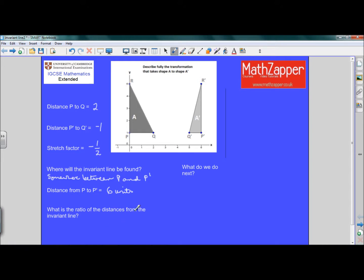What's the ratio of the distances from the invariant line? Now we're going to use a ratio because there's a line, the invariant line that is, that is going to be placed, which is exactly in the ratio of the stretch factor. So what is the ratio of the distance from the invariant line?